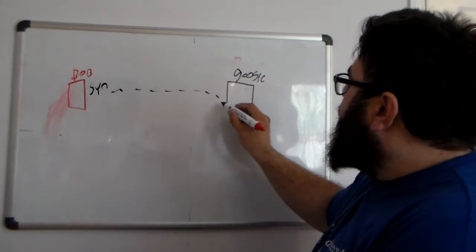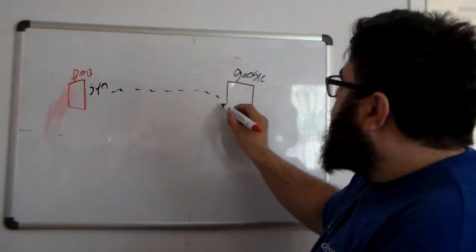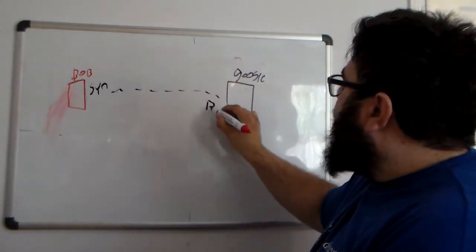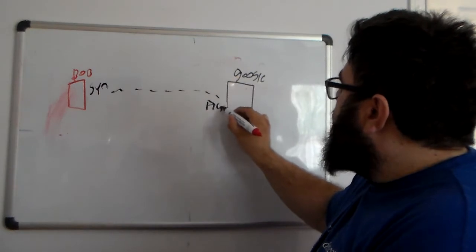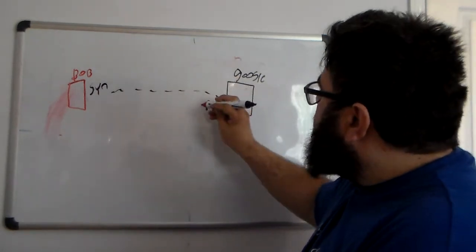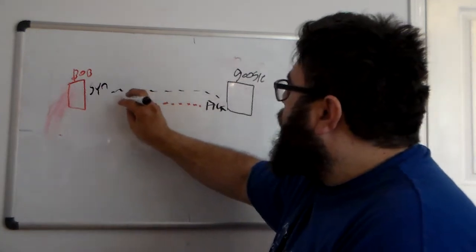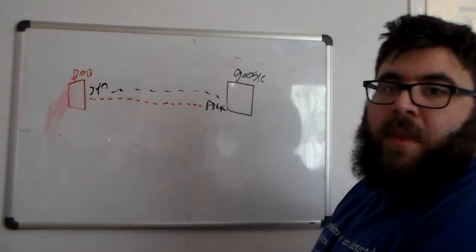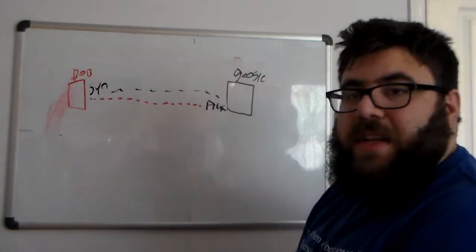So Bob sends this SIN packet to Google. Google responds with ACK, so for acknowledgement. Okay, so then Google responds with ACK.